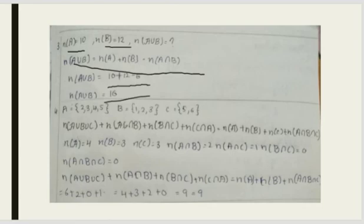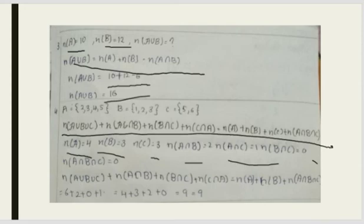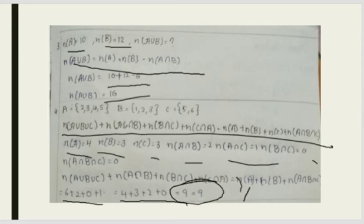The fourth question is a longer equation. Given n(A) = 4 and other values, we solve the big expression directly. It comes out to 6 + 2 + 0 + 1 = 4 + 3 + 2 + 0, which means 9 = 9. So LHS equals RHS and the equation is verified.